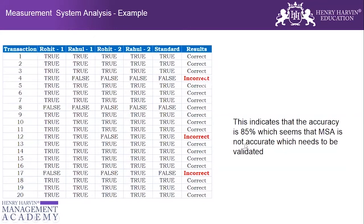The accuracy is 85%, which indicates that the MSA is not accurate and needs to be validated. The standard we follow for MSA is 90%. If the measurement system is less than 90% accurate, the measurement system is not good to go and we need to fix it — that's very important.